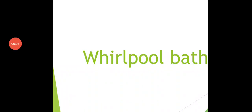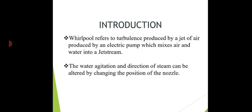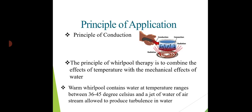Welcome back to the channel. Today our topic is whirlpool bath. A whirlpool refers to turbulence produced by a jet of air, basically produced by an electric pump. This electric pump mixes the air and water into a jet stream, and the direction of the stream can be altered by changing the position of the nozzle.